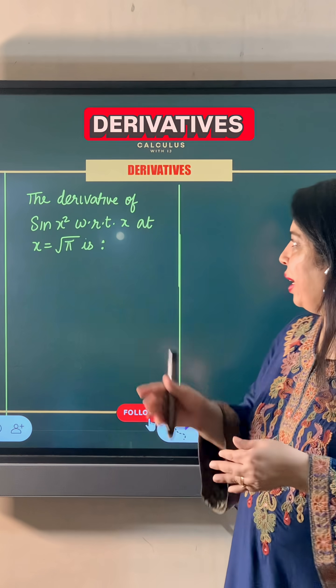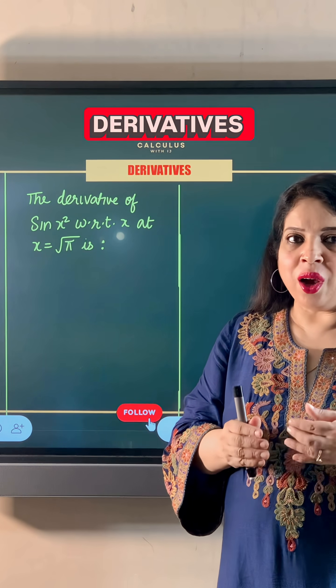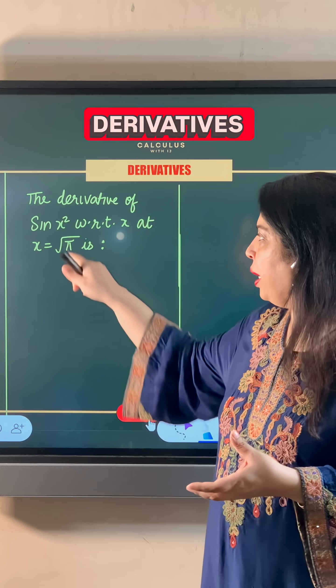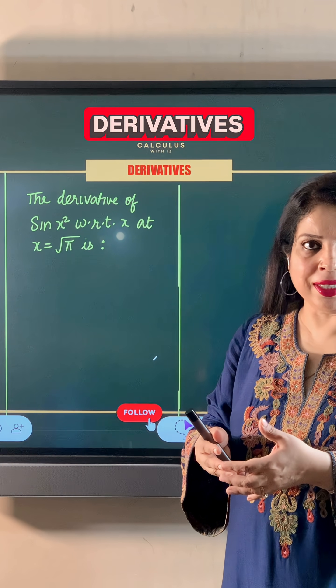In this question we have to find the derivative of sin x² with respect to x. Derivative means the small change in value of this function with respect to some variable, which is x in this case.